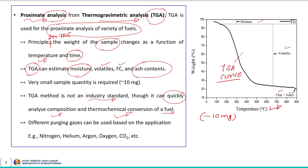Another advantage of this technique is that it can analyze different samples under different purging gases, and can be used based on the application. The purging gases that can be used include nitrogen, helium, argon, oxygen, and CO2. One of the most convenient advantages of this technique is that it can be carried out in a short span of time.